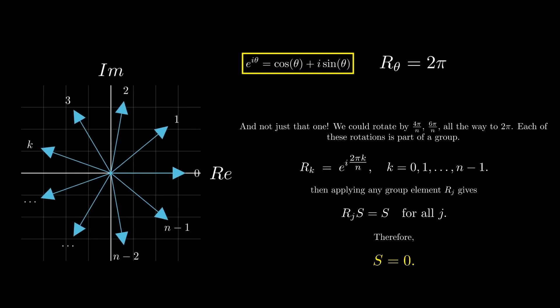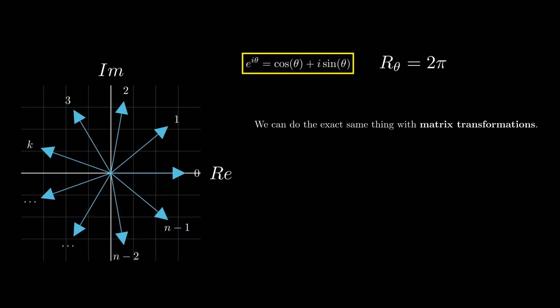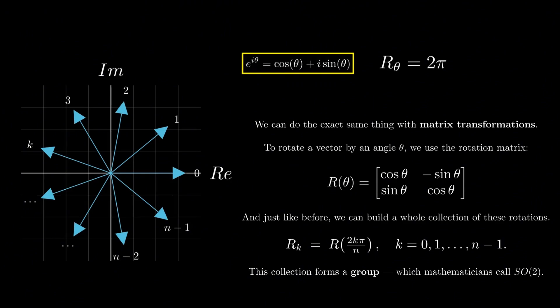Now in 2D we have Euler's formula, which makes rotations feel easy in the complex plane. But remember, all Euler's formula did here was rotate the vectors. We can do the exact same thing with matrix transformations. To rotate a vector by angle θ, we use the following rotation matrix. And just like before, we can build a whole collection of these rotations, and these collections form a group which mathematicians call SO(2).